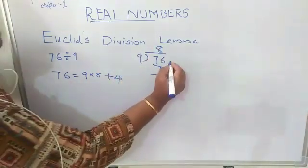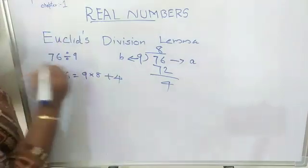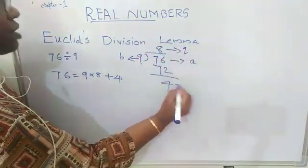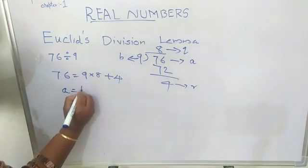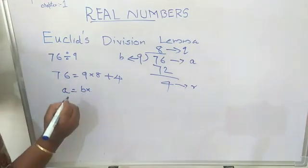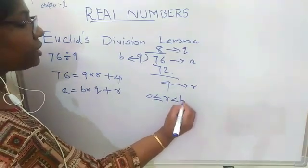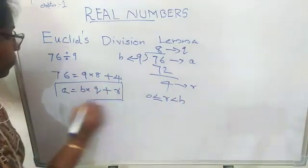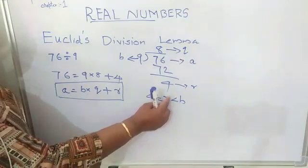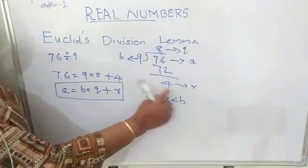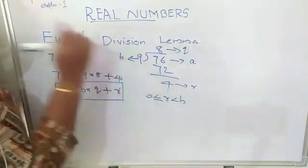Now, 76 is equal to 9 into 8 plus 4. Let us consider 76 as A, 9 as B, 8 as Q, and 4 as R. We can write it as A is equal to B into Q plus R, where 0 less than or equal to R less than B. This means that in some cases the remainder will become 0, and in all other cases the remainder is always less than the divisor — that is, R is less than B.